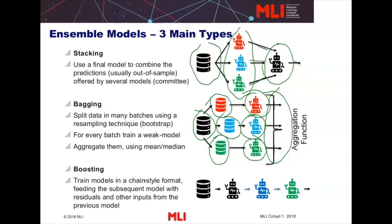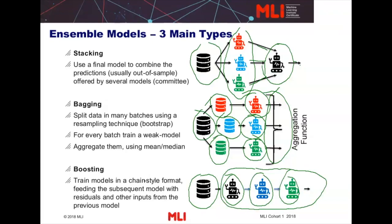The final type is boosting. Boosting is a chain-style methodology. You start with a dataset, create the first model, and compute the residuals between the prediction of your first model and the target you are trying to predict. You use those residuals plus the inputs to train a second model, then compute the residuals with the second model and use them as a target for the third model. You do this over and over. In the end, you simply sum up all these models. You have this chain-style format feeding each subsequent model with residuals and all inputs from the previous model. These are the main treatment types, and they are the ones you find most often in the literature and in practice.